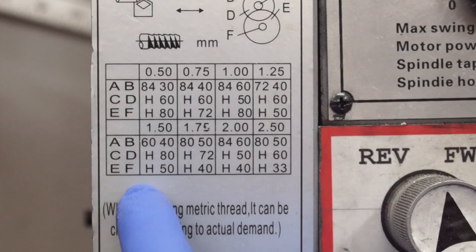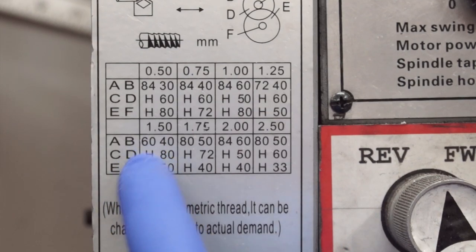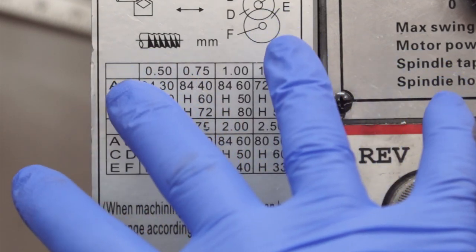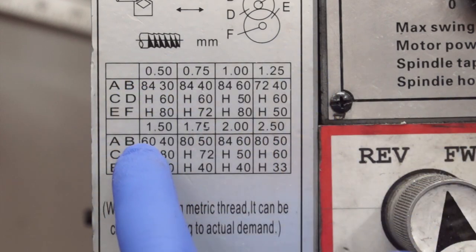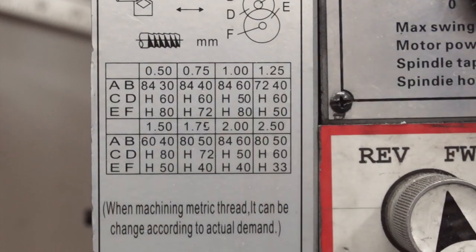The pitch I need calls for four gears: 60, 40, 80 and 50 teeth. The letter H or X or anything that's not a number is basically a space that needs to be filled with something.